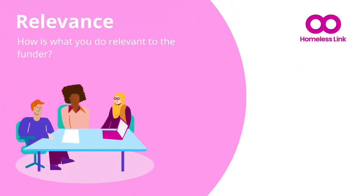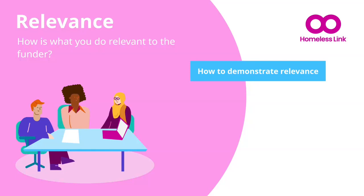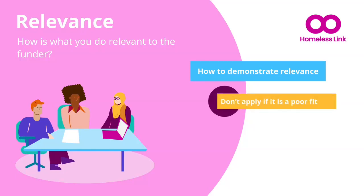Next, relevance. How is what you do relevant to the funder? If you have screened the opportunity well, you will have understood that there is alignment. But you need to make sure that the person reading your application — who will be reading many, many more — can easily make the connection that you have. First of all, check that it is relevant, and if it isn't, don't apply. People reading bids can tell if you are bending to fit their needs. It comes out in inconsistencies, lack of clarity, the language you use and the budget you present. So really check, and if it feels like there are too many compromises, don't apply.